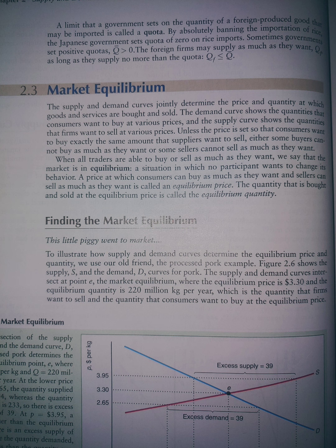When all traders are able to buy or sell as much as they want, we say that the market is in equilibrium — a situation in which no participant wants to change its behavior. A price at which consumers can buy as much as they want and sellers can sell as much as they want is called an equilibrium price.